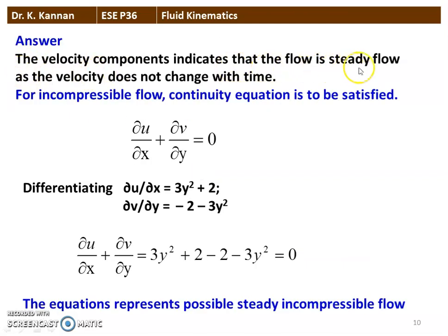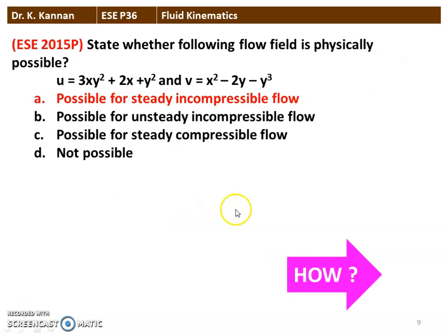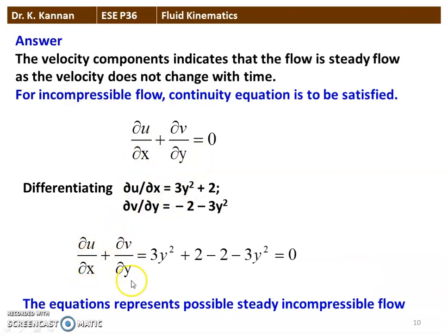The velocity components indicate that the flow is steady since velocity does not change with respect to time — there is no time parameter. For incompressible flow, the continuity equation must be satisfied: ∂u/∂x + ∂v/∂y = 0. Differentiating: ∂u/∂x = 3y² + 2 and ∂v/∂y = -2 - 3y². Substituting: (3y² + 2) + (-2 - 3y²) = 0. The continuity equation is satisfied, so the flow represents possible steady incompressible flow.